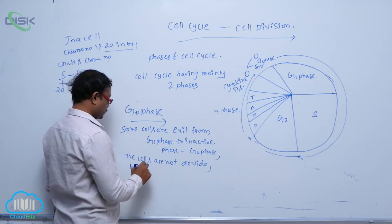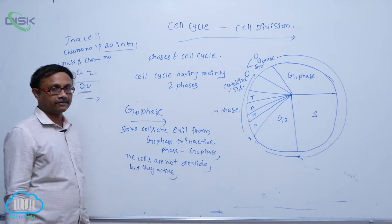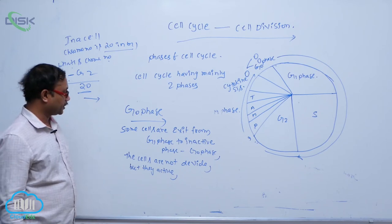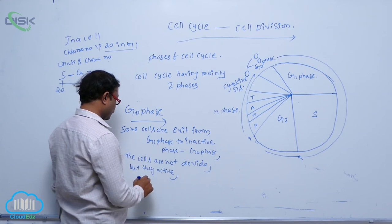But they are metabolically active. Only depend upon the requirement of cell, they are divided. Otherwise, they do not divide. This phase is also known as quiescent stage.